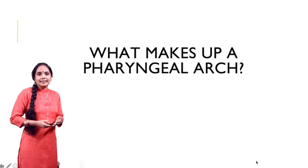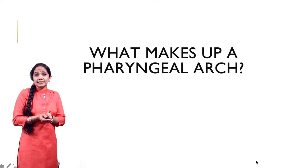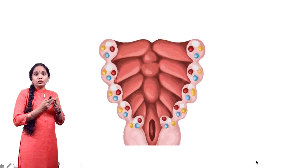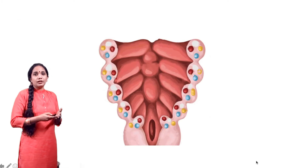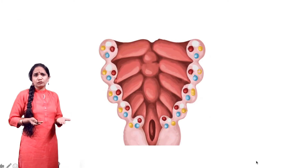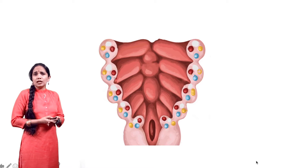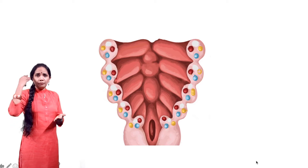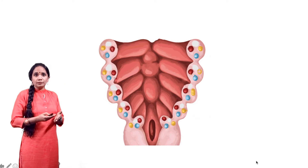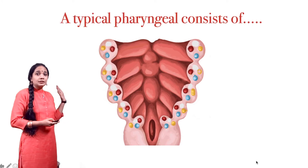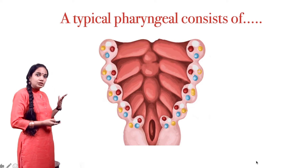Hello everybody. Let us see what makes up a pharyngeal arch. Here you have a picture that we have seen in most of our embryology textbooks. This is a section of the embryo with the top part cut off, looking at it from the posterior aspect, and typical pharyngeal arch structures can be studied in this view.